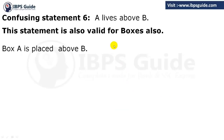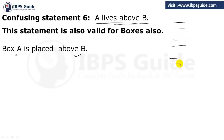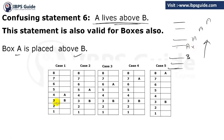The sixth statement: A lives above B, also valid in boxes as box A is placed above B. Above B — what does it actually mean? Suppose you have a stack and B is somewhere here. A is above means not only immediately above. A can be here, can be here, or can be here — it must be above B but it does not mention where. A can be anywhere above B.